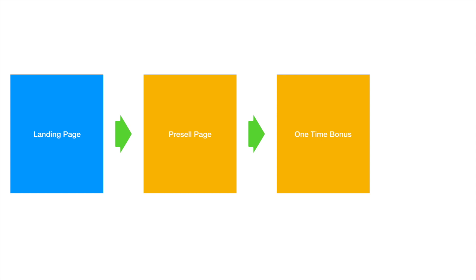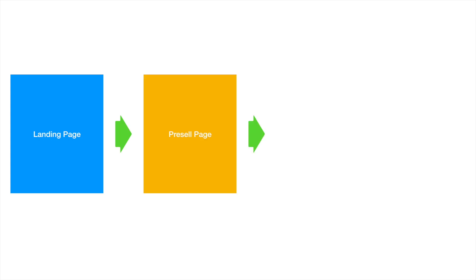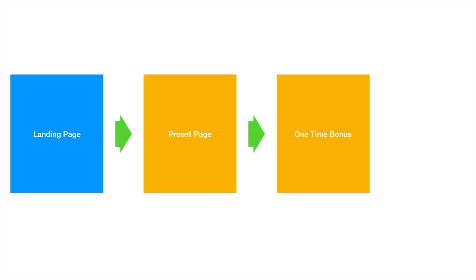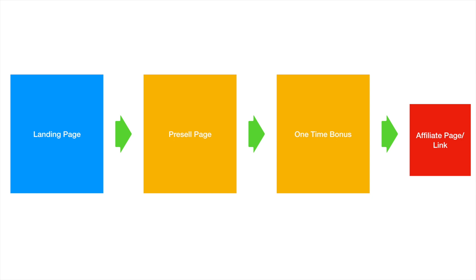So what you want to do is add this extra one-time bonus to the next page. Basically when they click the call-to-action button on the pre-sale page, they're going to see this one-time bonus that is going to encourage them to take action — at least the people who have the capability to buy the product you're selling. That's the extra step to help push your sale, and then obviously it goes to the affiliate page or link or whatever you're selling.